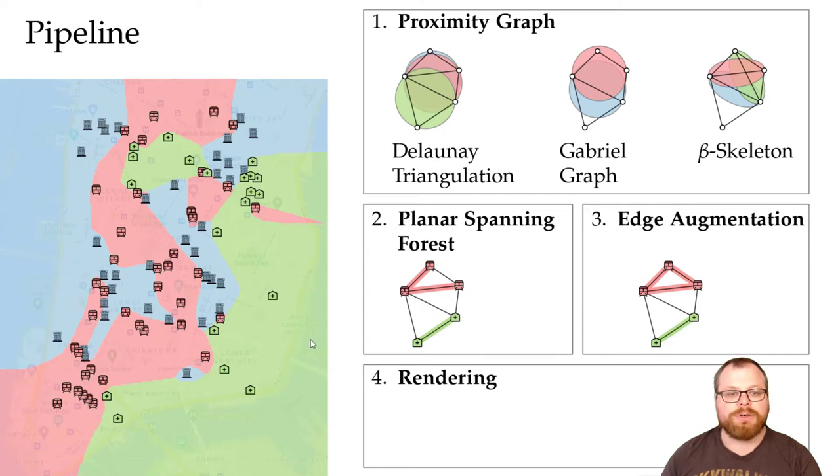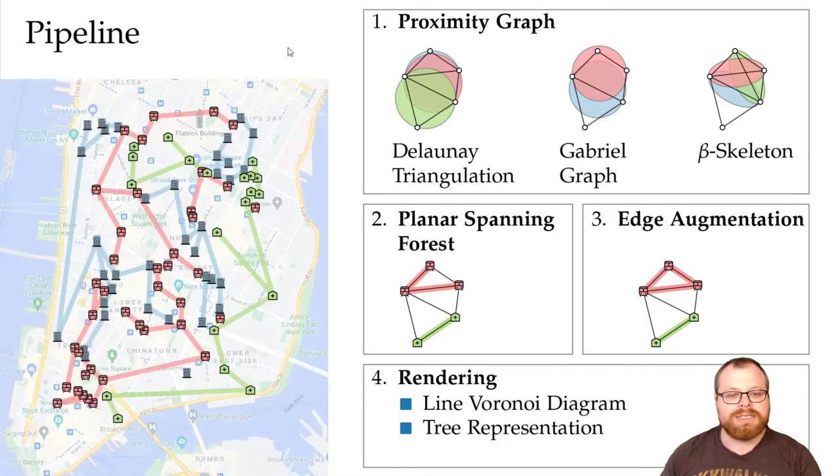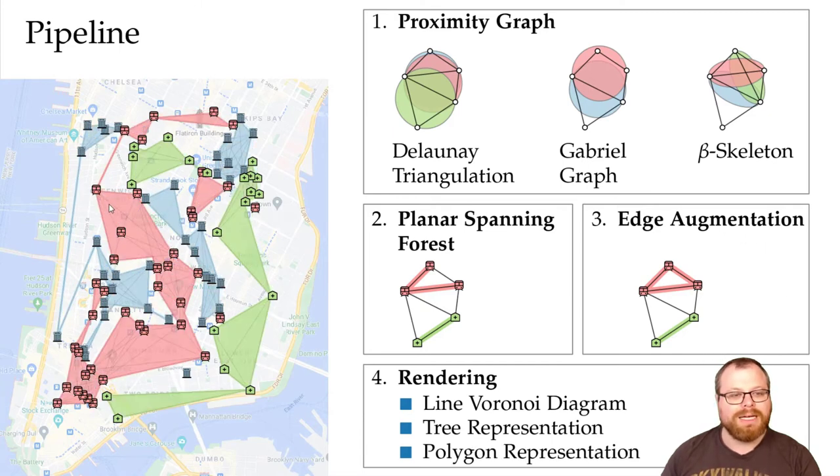For that, there are different approaches. For example, we can use the line Voronoi diagram, or we can simply display a planar spanning forest. Or a third approach is to take what we have after step 3 and try to draw empty polygons around these edges.